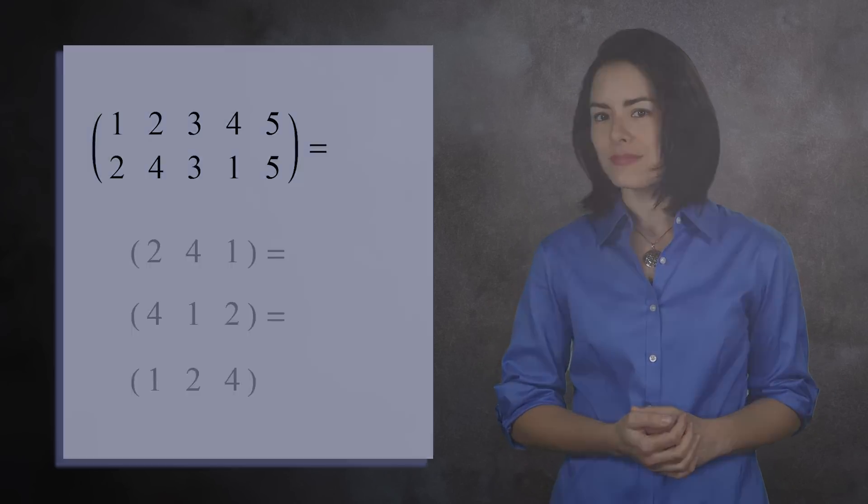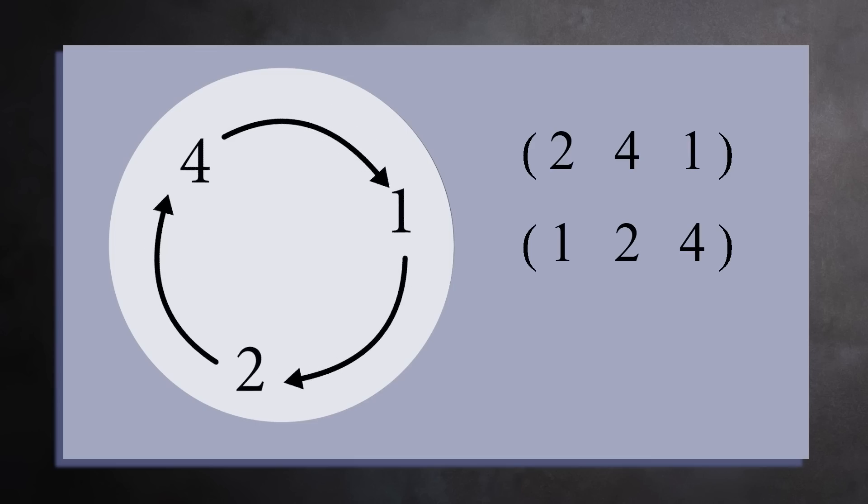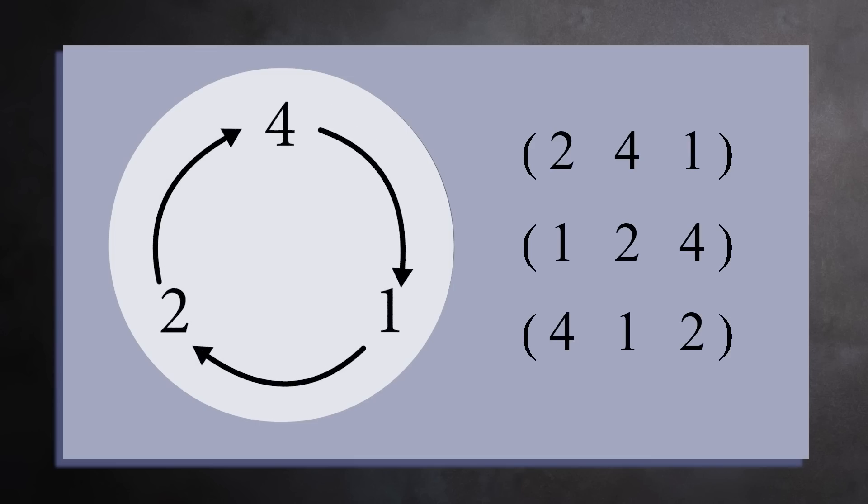Here's how to visualize what's going on. Imagine these numbers are on a circle, with arrows going clockwise. We then see that 2 maps to 4, 4 maps to 1, and 1 maps to 2. If we start at the top, this gives us the cycle 2, 4, 1. Look what happens if we rotate this circle a third of a turn. Then we get the cycle 1, 2, 4. And if we rotate another third, we get the cycle 4, 1, 2. This is why they're called cycles. While we write the numbers in a row, in reality they represent a loop of mappings. These three cycles all represent the same information. A good rule of thumb is to pick the cycle that starts with the smallest number. So in this case, we'd write it as 1, 2, 4.